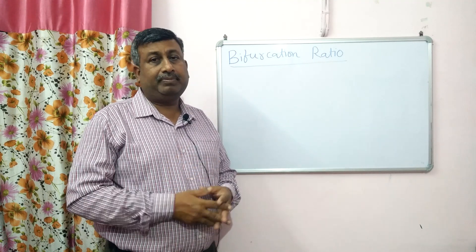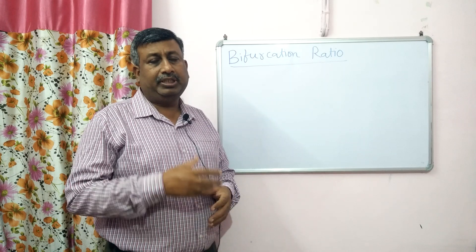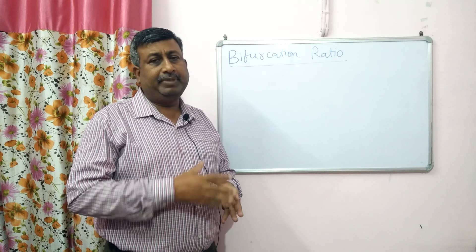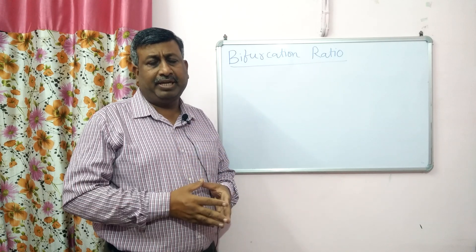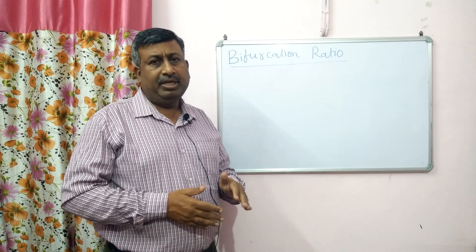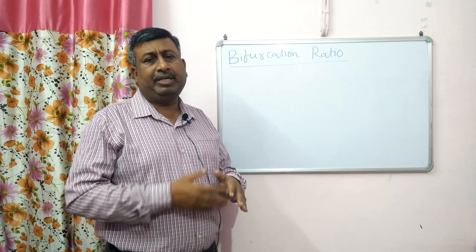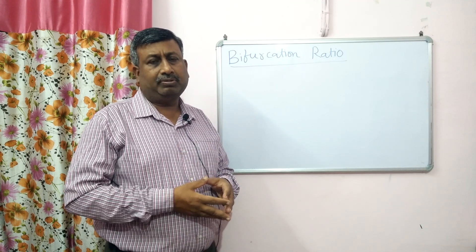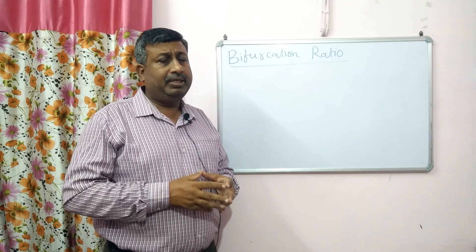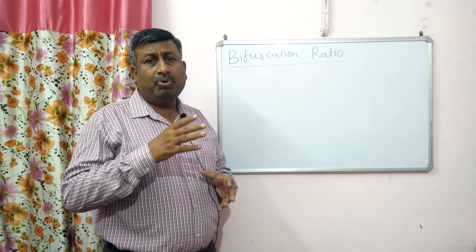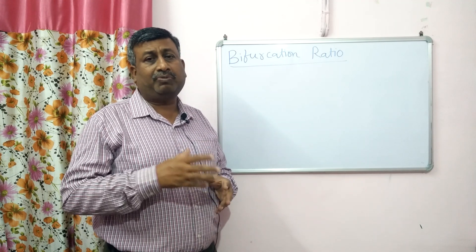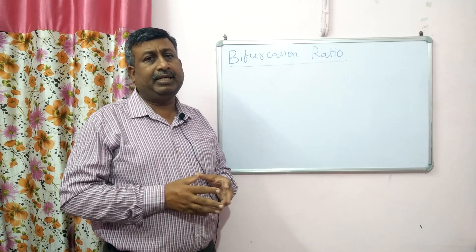This ratio indicates the branching pattern of the stream network. If bifurcation ratio is high, it means there is more drainage, more streams, and water is not infiltrating into the soil. If water is not infiltrating, there is no recharge of ground water — wastage of rainfall. High bifurcation ratio means more runoff, more water erosion, more soil erosion, loss of topsoil, and reduced productivity of that area.